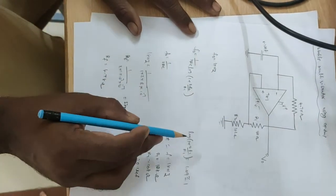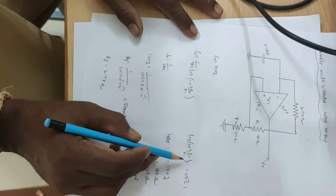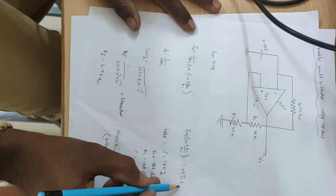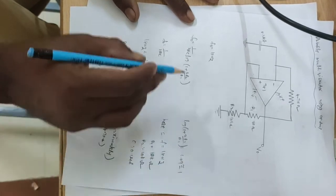Here logarithm of 1 plus 2 R2 by R1. Substitute R1 R2. The total value is approximately 1. The 1 is substituted here.